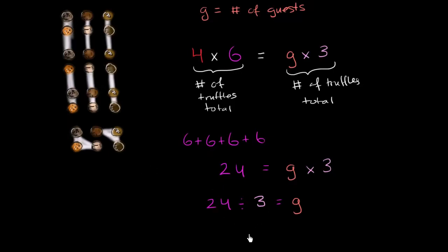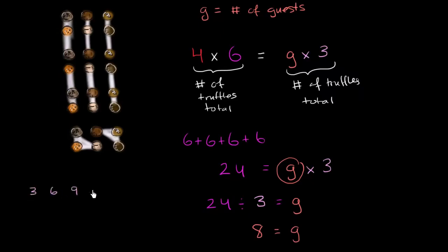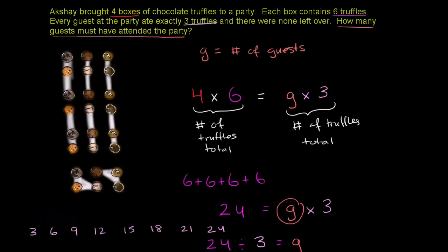We see that G, or 24 divided by 3, is 8, which must be equal to the number of guests at the party. Another way to think about it: G times 3 equals 24, so what times 3 is 24? Think about multiples of 3: 3×1=3, 3×2=6, 3×3=9, 12, 15, 18, 21, 24 — that's 3 times 8. So G must equal 8. We had exactly 8 guests at the party.